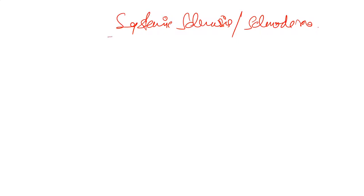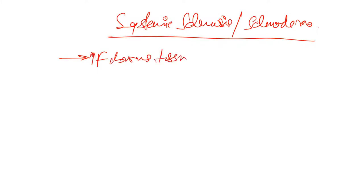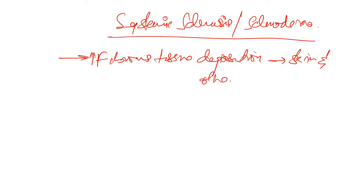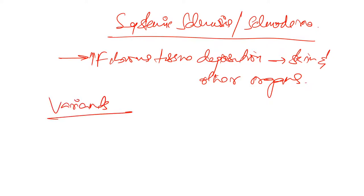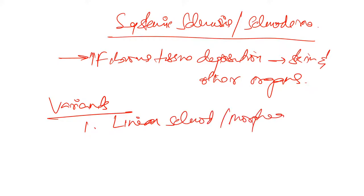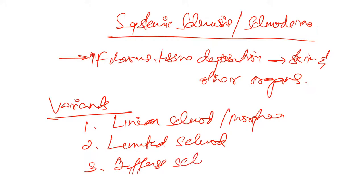Now we'll talk about systemic sclerosis, also known as scleroderma. In systemic sclerosis, there is increased fibrous tissue deposition in the skin and other organs. The variants of systemic sclerosis are: linear scleroderma (also known as morphea), limited scleroderma, and diffuse scleroderma.